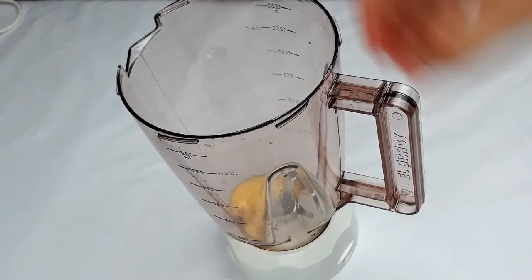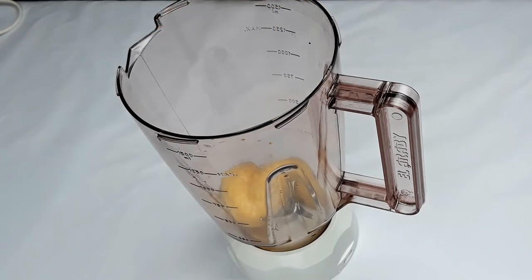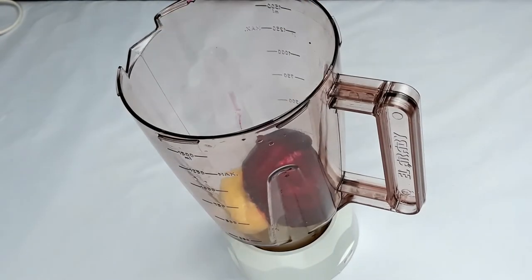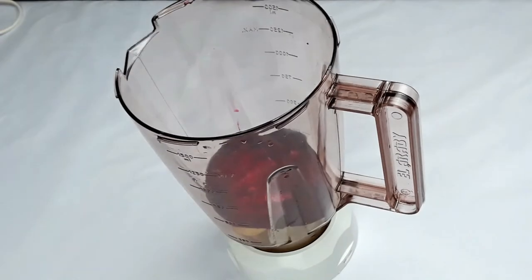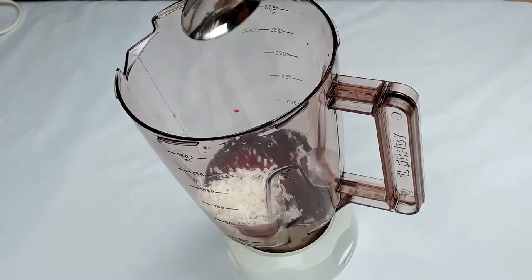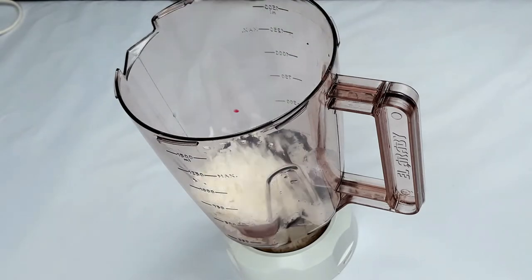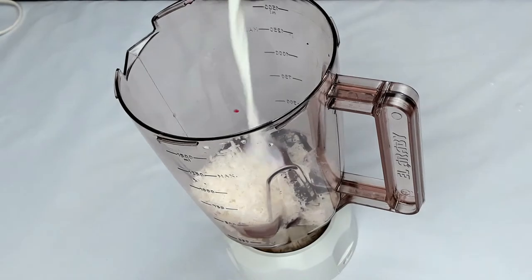As for the fourth and last type, it is 2 layers. For the first layer, we need 2 bananas, 2 pieces of beet, ice cube, 2 tablespoons of coconut, and 1 third cup of coconut milk.